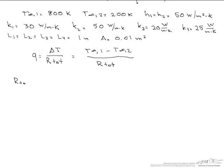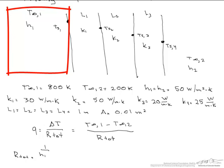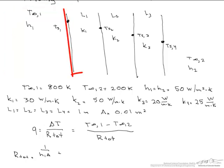The first resistance that we have, looking at this picture, is that convective resistance, which is 1 over H1A. We add to that the first conductive resistance, which is L1 over K1A.